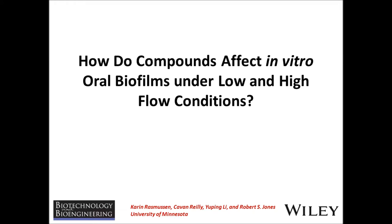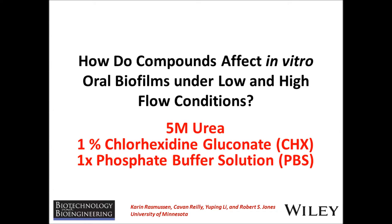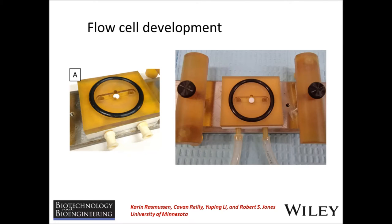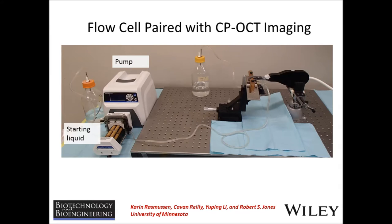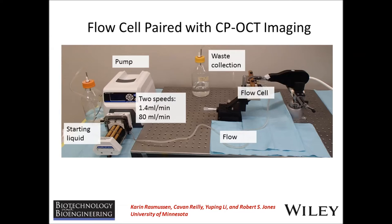One of the research questions this paper addresses is how compounds affect in vitro oral biofilms under low and high flow conditions. Specifically, we looked at three different compounds and their effect on oral biofilms. The first part of our paper discusses the development and characterization of a flow cell that can accommodate biofilm grown on saliva-coated hydroxyapatite discs. The paper discusses how we use two different speeds to create two different types of shear stress across the biofilm in the flow cell.